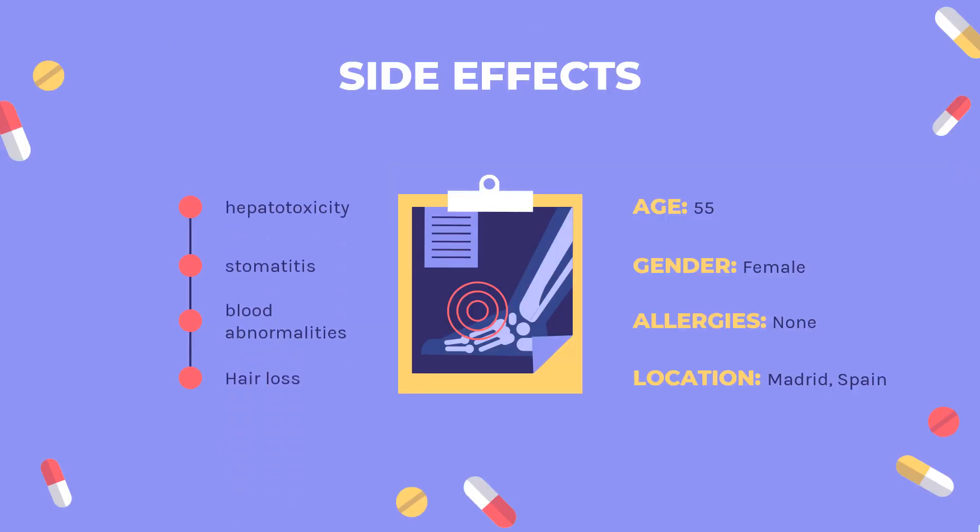Side Effects: The most common adverse effects include hepatotoxicity, stomatitis, blood abnormalities, leukopenia, anemia, and thrombocytopenia; increased risk of infection; hair loss; nausea; reduced appetite; abdominal pain; diarrhea; fatigue; fever; dizziness; drowsiness; headache; acute pneumonitis; and renal impairment. Methotrexate can also cause mucositis.